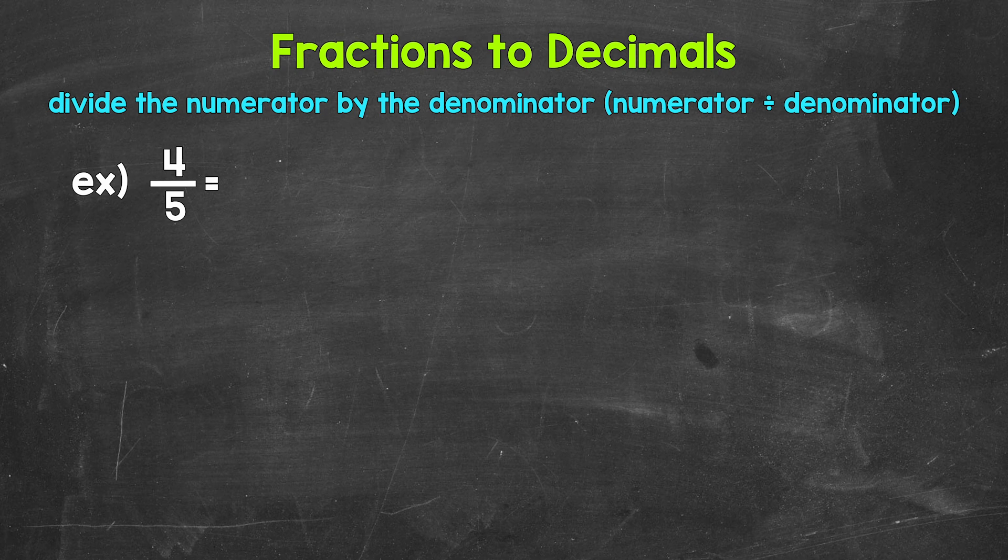Now when we convert a fraction to a decimal, we can divide the numerator, the top number of the fraction, by the denominator, the bottom number of the fraction. So for 4 fifths, we can set this up as 4 divided by 5.